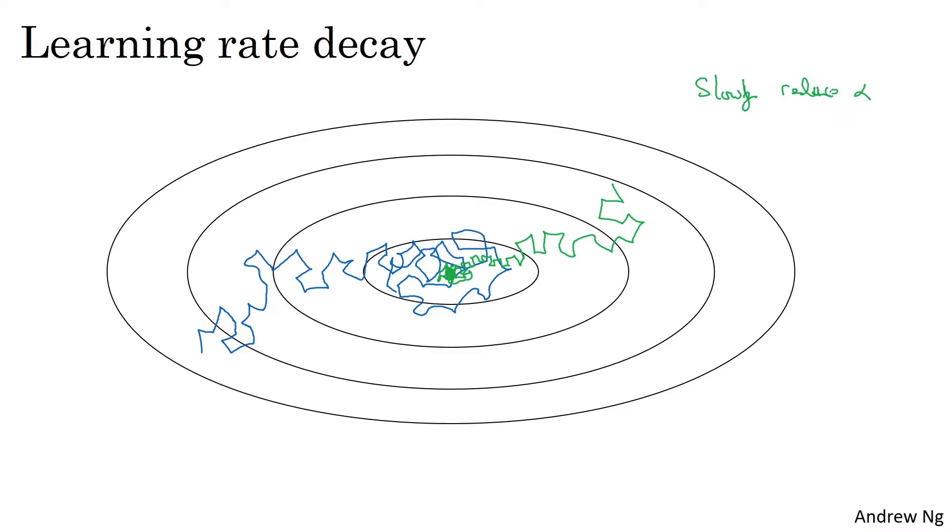So the intuition behind slowly reducing alpha is that, maybe during the initial steps of learning, you could afford to take much bigger steps. But then as learning approaches convergence, then having a slower learning rate allows you to take smaller steps.